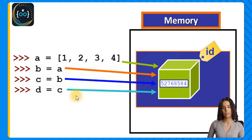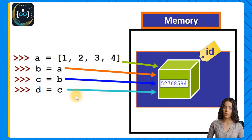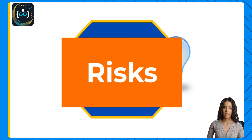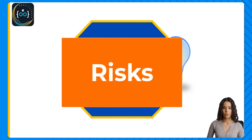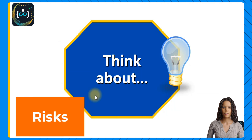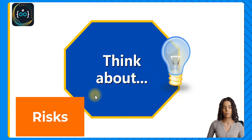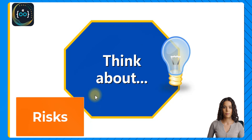Now think about the risks of aliasing. We will cover this in this section — start thinking about what could happen if two or more variables reference the same object in memory. Is this good? Is this bad? And what are the risks?